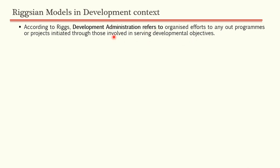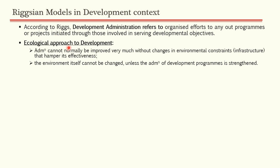Riggs developed the ecological concept of development administration. His ecological approach says that administration cannot normally be improved very much without changes in the environmental constraints or infrastructure that hamper its effectiveness. Additionally, the environment itself cannot be changed unless the administration of development programs is strengthened. This is a bi-directional relationship.